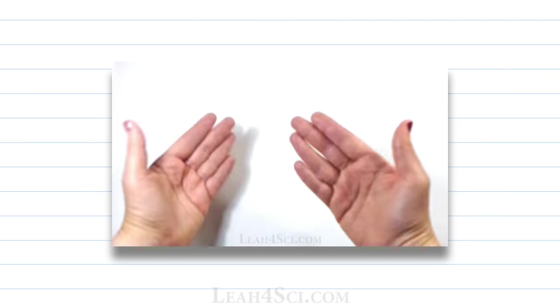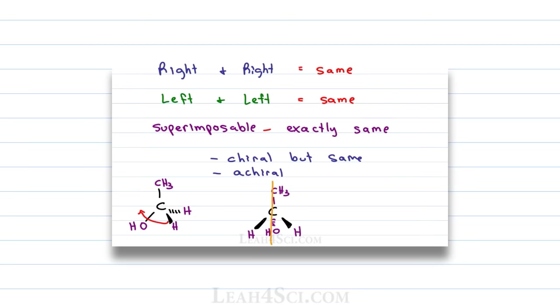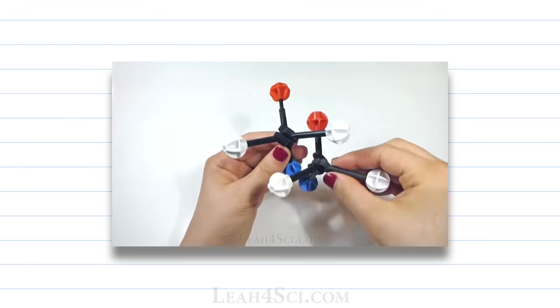In the last video, we introduced the concept of chirality and said that we classify a pair of enantiomers as having the R or S configuration. How do we do that? We need to find the absolute configuration around each chiral atom or each chiral carbon where the absolute configuration looks at the chiral carbon, the atoms around it and then the order of the atoms to give you R or S.